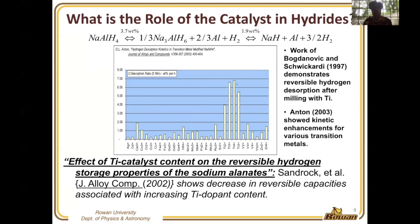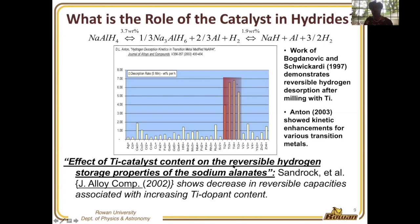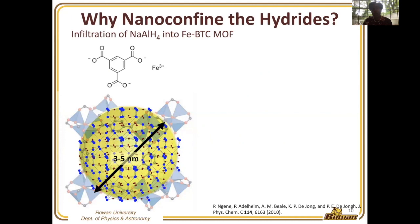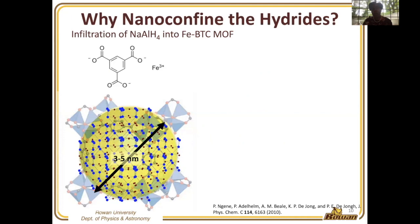To review the effect of the catalyst: titanium operates the best at driving the reverse reaction. Today I want to draw your attention to what happens when we both catalyze with transition metals such as titanium and also nano-confine the material. In our earlier work, we used the metal organic framework FVBTC, which has pore pockets about three to five nanometers in size—meaning we could fit about 30 to 50 unit cells inside the pore. We were not the first to consider nano-confining this material; this work had been undertaken since 2009 by several groups.